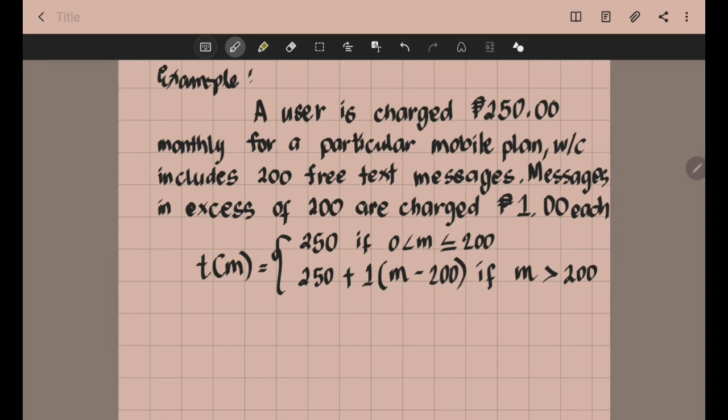Let's have an example for this situation. Let's say the user sent 5 text messages in one month. Which formula will we use? Is it formula 1 or formula 2? Since the number of text messages is 5 and that is between 0 and 200, we will use formula 1.